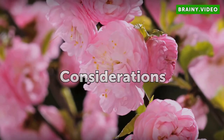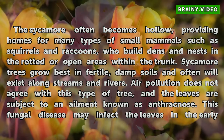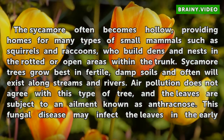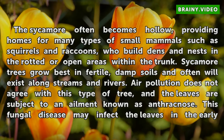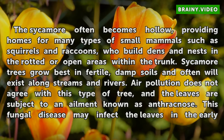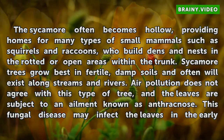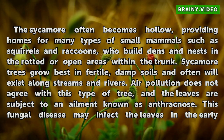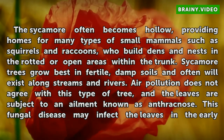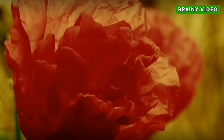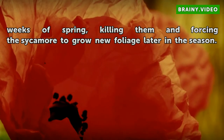Considerations. The sycamore often becomes hollow, providing homes for many types of small mammals such as squirrels and raccoons, who build dens and nests in the rotted or open areas within the trunk. Sycamore trees grow best in fertile, damp soils and often will exist along streams and rivers. Air pollution does not agree with this type of tree, and the leaves are subject to an ailment known as anthracnose. This fungal disease may infect the leaves in the early weeks of spring, killing them and forcing the sycamore to grow new foliage later in the season.